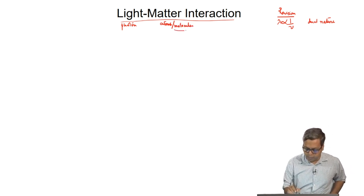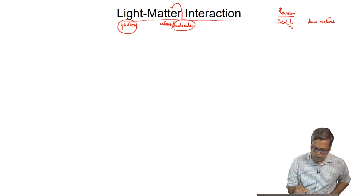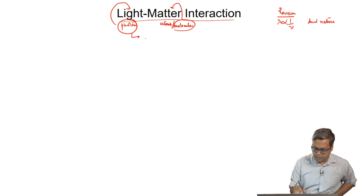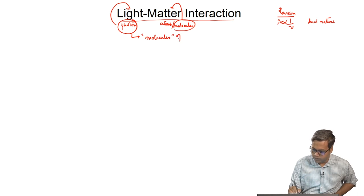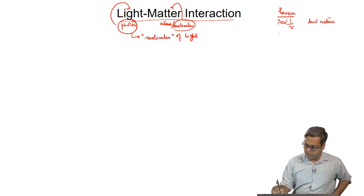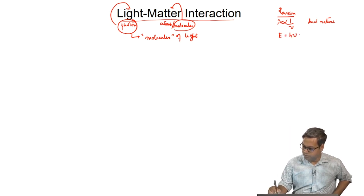We can think: what a molecule is for matter, a photon is for light. In other words, we can write photons as molecules of light. We have seen that the energy of one photon is given by E equals h·nu, which equals h·c divided by lambda.